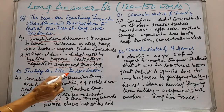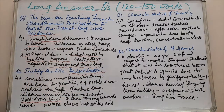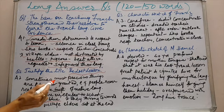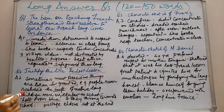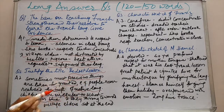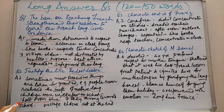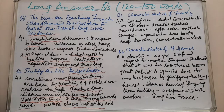Another important question: Justify the title 'The Last Lesson.' The title is significant because it conveys the central theme. It highlights that sometimes the most precious things are taken for granted by us. The people never realized the importance of their native language — children were irregular to school and did not concentrate in class. But the order from Berlin that German would be taught from the next day came as a bolt from the blue, meaning it was very shocking and completely unexpected. They thronged towards the school and village elders also sat at the end of the class. So the title is absolutely apt as it revolves around the last lesson in French.